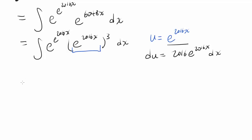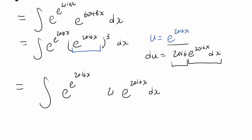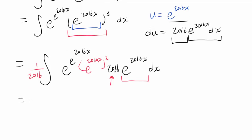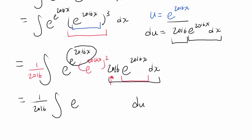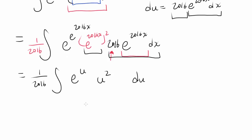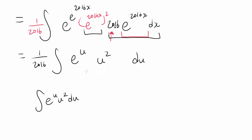So let's force du to appear inside our integral. We have the integral of e to the e to the 2016x, and we need to have e to the 2016x dx. We're breaking apart e to the 2016x cubed to e to the 2016x times e to the 2016x squared. And since we are multiplying by 2016, we want to divide by 2016. So we have du as we wished — we have 1 over 2016, and we have e to the power of u times u squared. So everything boils down to integrating e to the u times u squared du.